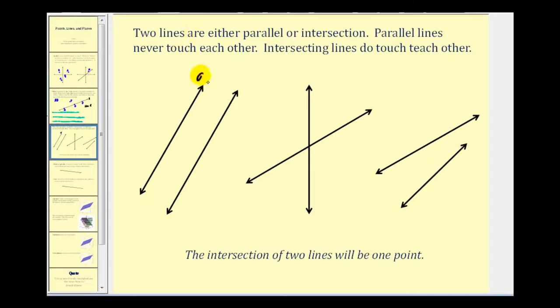So if we call this line A and this line B, the way we identify the two lines are parallel is we say that A is parallel, that's the parallel symbol, to line B. And when we have two intersecting lines, the intersection of the two lines will only be one point. So for these two lines, this would be our point of intersection and it's the only point of intersection.